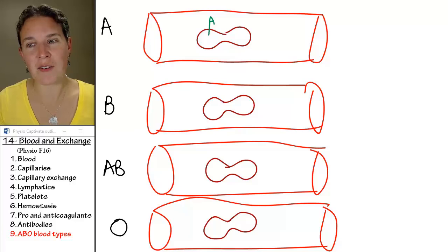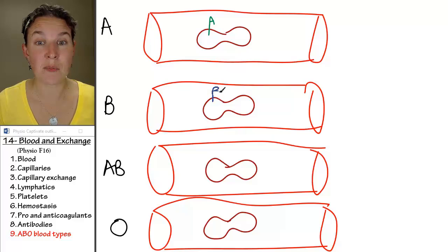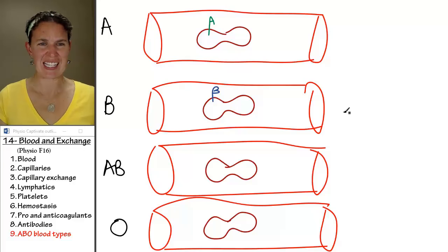What kind of antigen would you expect in a type B blood cell? It's going to be a B antigen, right? Super easy. Done.